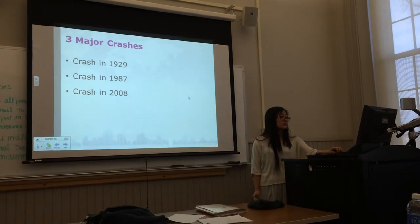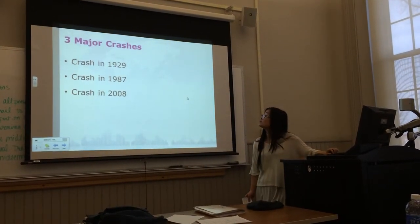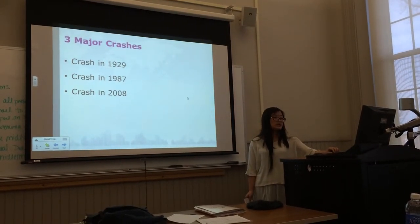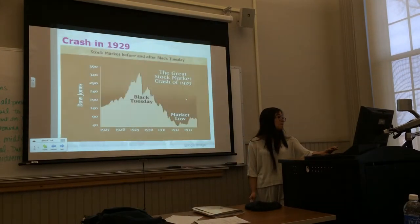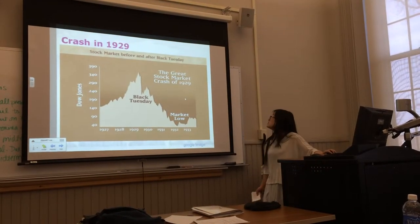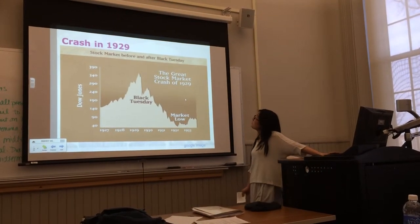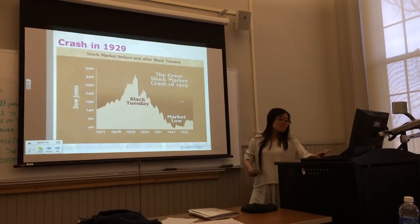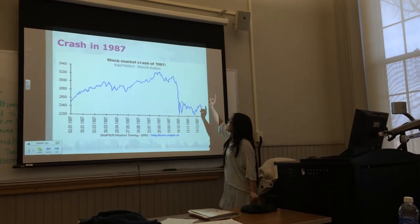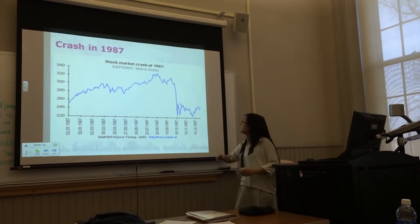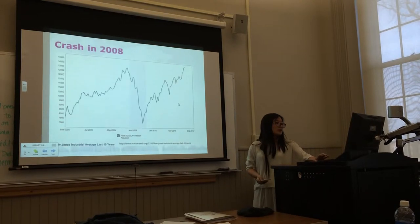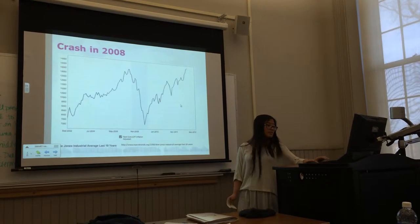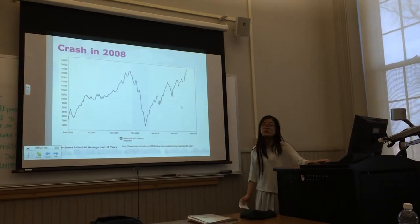There are three major crashes that happened in American history, including the crash in 1929, the crash in 1987, and the crash in 2008. As you can see here, the stock price dropped dramatically in several days in 1929, and also in 1987 and 2008 the stock price dropped very steeply.